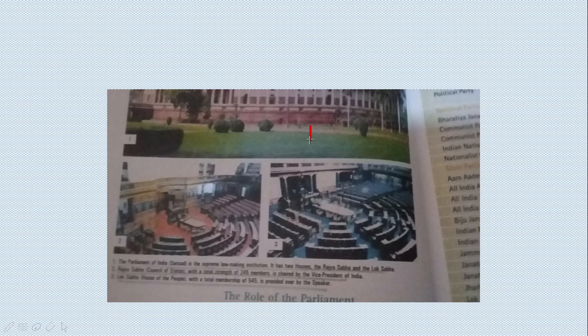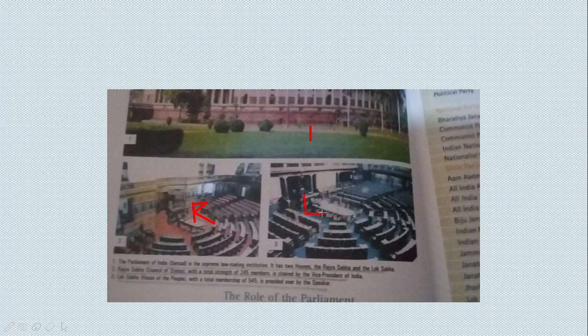This is our Parliament. The Parliament of India is the Sansad — it is a supreme law-making institution. It has two houses: Rajya Sabha and Lok Sabha. Rajya Sabha is the Council of States, with a total strength of 245 members and is chaired by the Vice President. Lok Sabha is the House of the People, with 545 total members and is presided over by the Speaker.